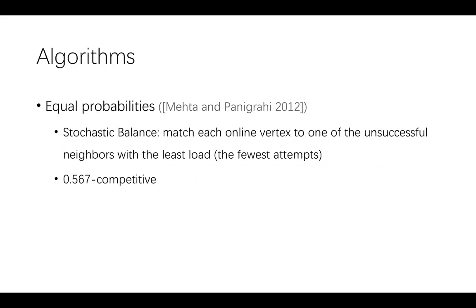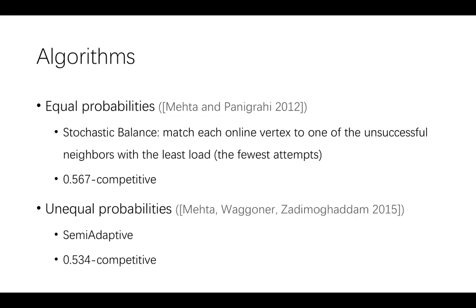The algorithms in previous work consider two cases depending on whether all success probabilities are equal. For the equal probability case, Mehta and Panigrahi proposed an algorithm called stochastic balance, which matches each online vertex to one of its unsuccessful neighbors with the least load or fewest attempts, and proved it is 0.567-competitive. For the unequal probability case, Mehta, Waggoner, and Zadimoghaddam proposed a 0.534-competitive algorithm called semi-adaptive in 2015.